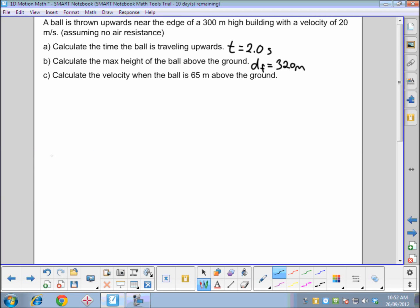So this is our third video in this problem to calculate the answer to C. Once again, a ball is thrown upwards near the edge of a 300 meter high building with a velocity of 20 meters per second, assuming no air resistance.